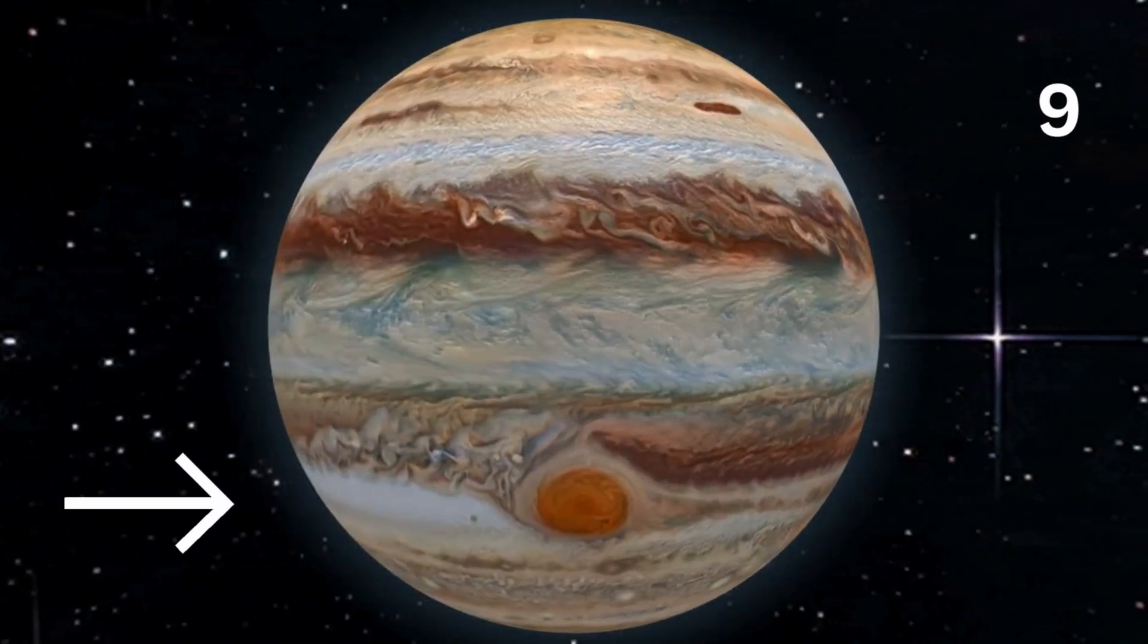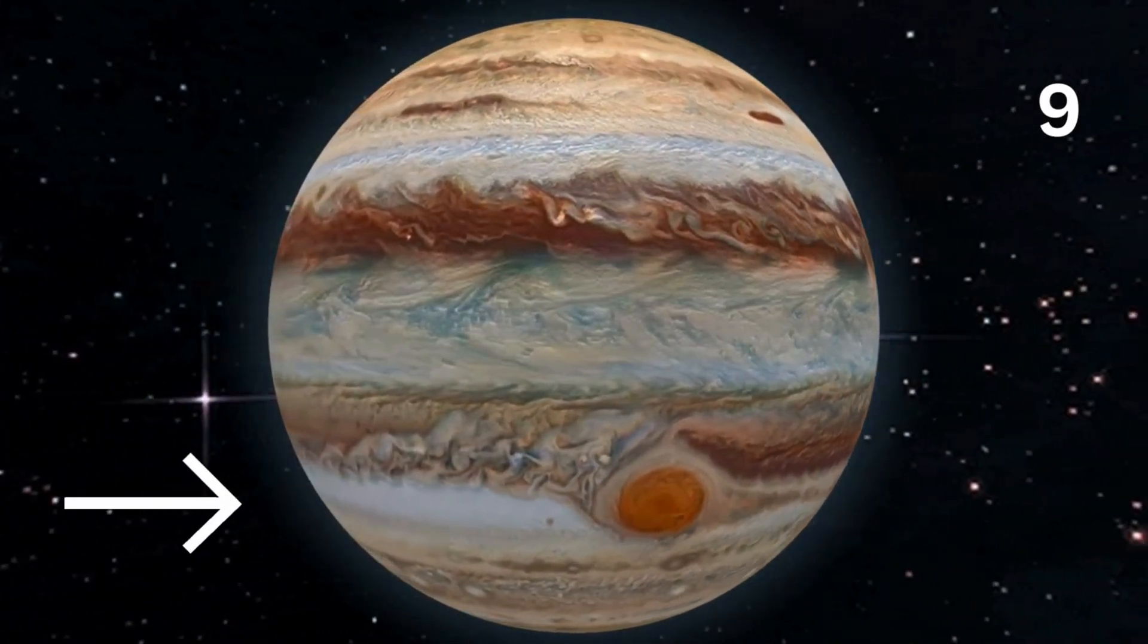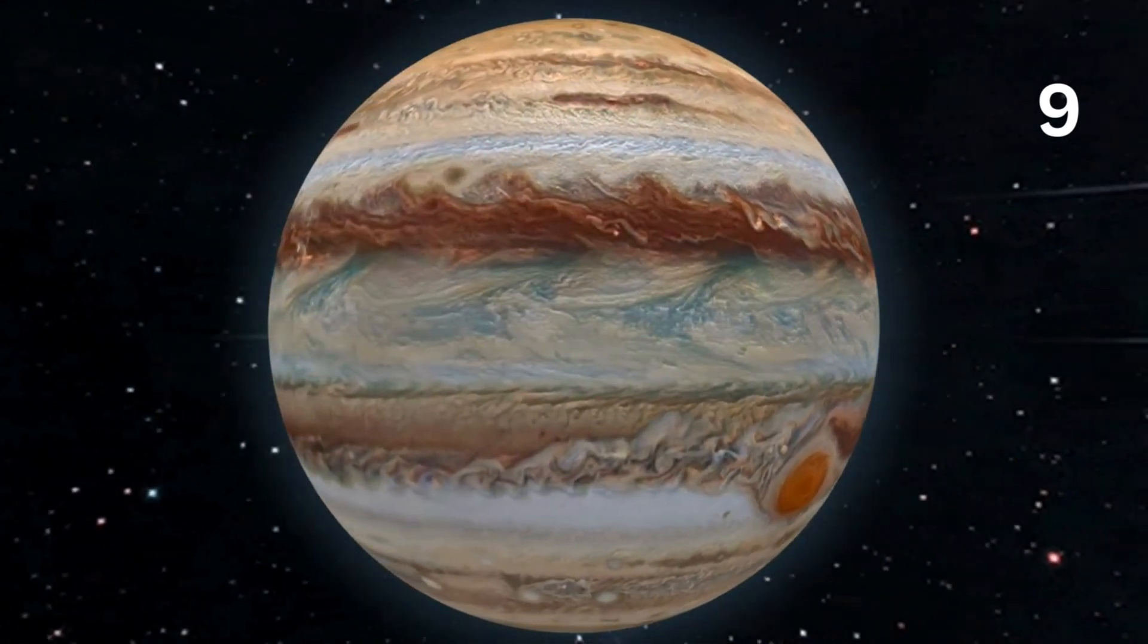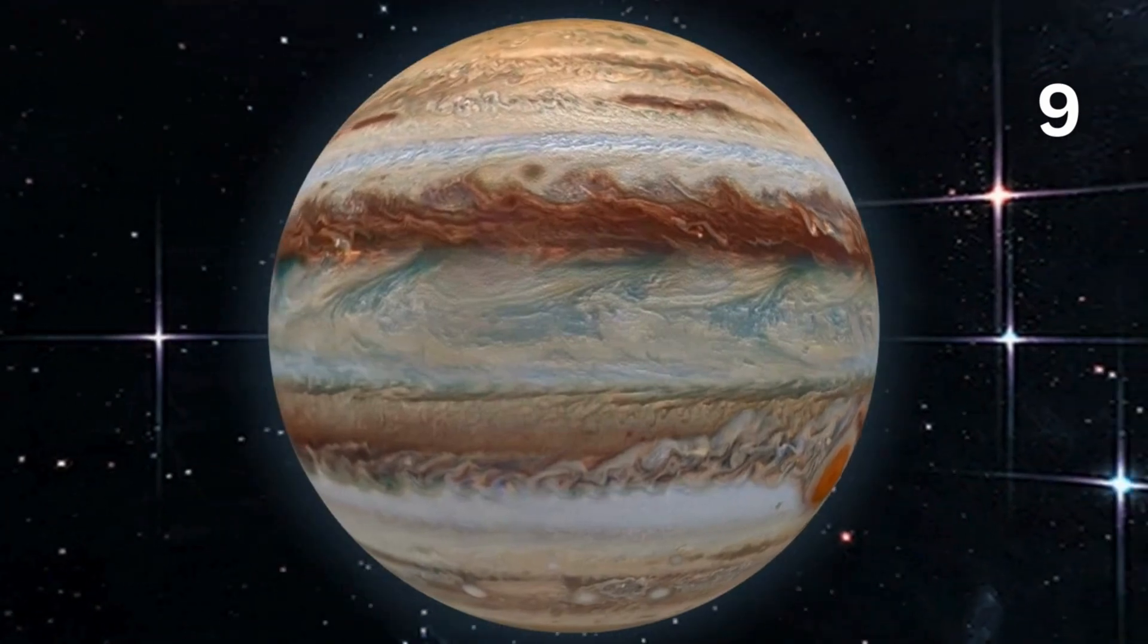Just like Jupiter has a giant red spot that is a storm that never ends, Saturn also has a storm like that. Only it's shaped like a hexagon! Isn't that crazy? I wish I had a video of it, but you can go online and look it up. It really is incredible to see.